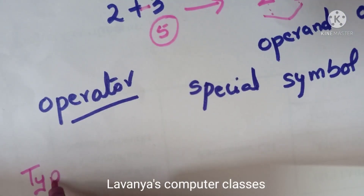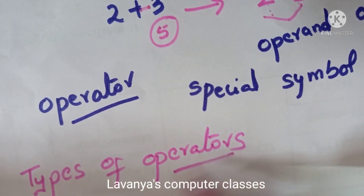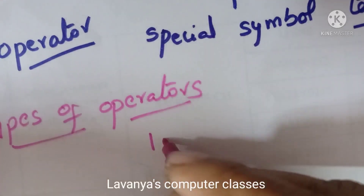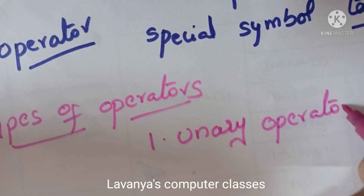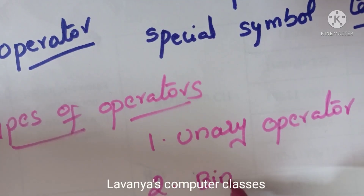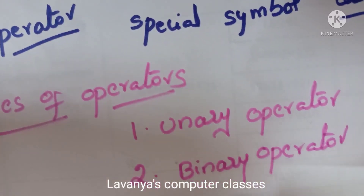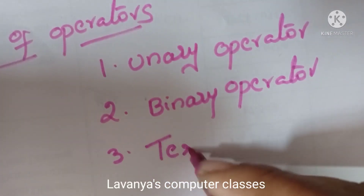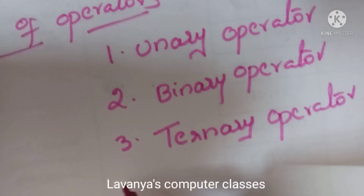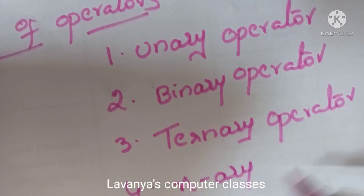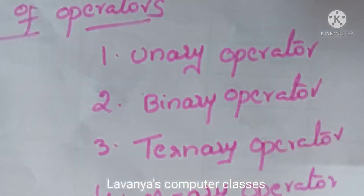Now we go for types of operators, or categories of operators. There are totally 4 categories of operators: unary operator, binary operator, ternary operator, and n-ary operator.